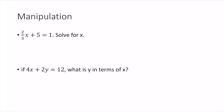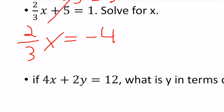I need to get x by itself. My first move is to subtract 5 from both sides. I end up with 2/3x = -4. Moving x to the top, I have 2x/3 = -4.